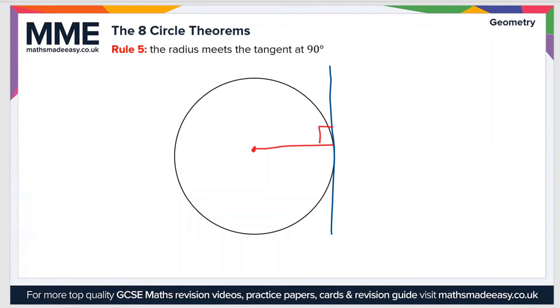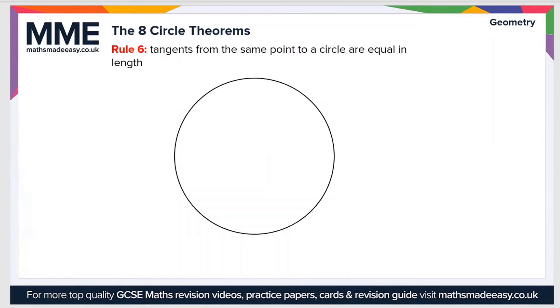Where these two lines meet will form a right angle — in other words, the radius and the tangent are perpendicular to each other. On to rule number six now.